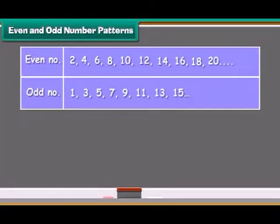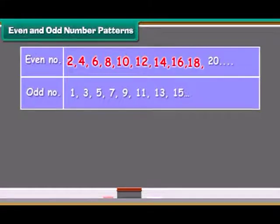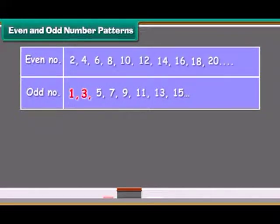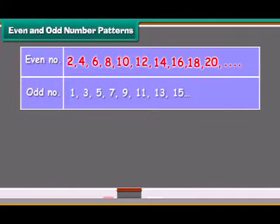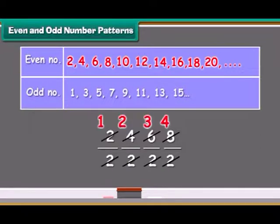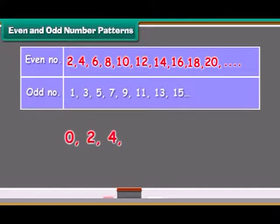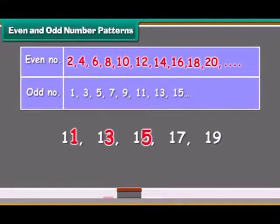Look at the numbers given here: 2, 4, 6, 8, 10, 12, 14, 16, 18, 20, and so on. 1, 3, 5, 7, 9, 11, 13, 15, and so on. The first series are called even numbers. Even numbers are divisible by 2 and end with 0, 2, 4, 6, and 8. The numbers ending with 1, 3, 5, 7, and 9 are called odd numbers. Both in even and odd numbers, we skip count by 2's.